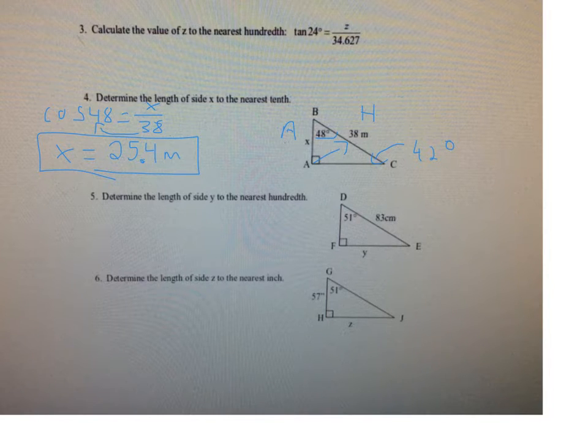So same thing with number five. I won't go through the whole solution this time, but if you have the angle 51 given at angle D, then Y is the opposite side of your triangle and the hypotenuse is 83. And so this one's going to be the sine ratio: sine of 51 equals Y over 83. And you can then multiply 83 times sine of 51.